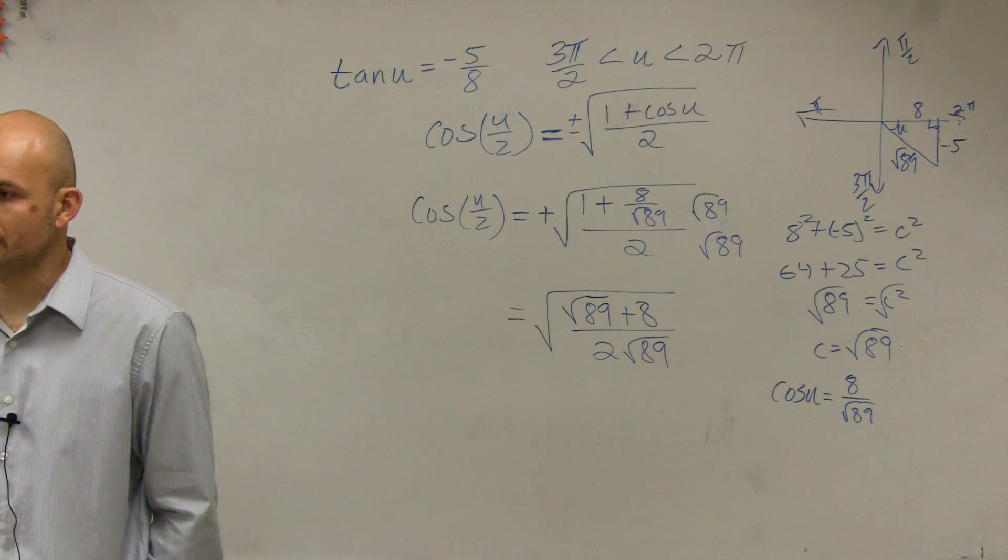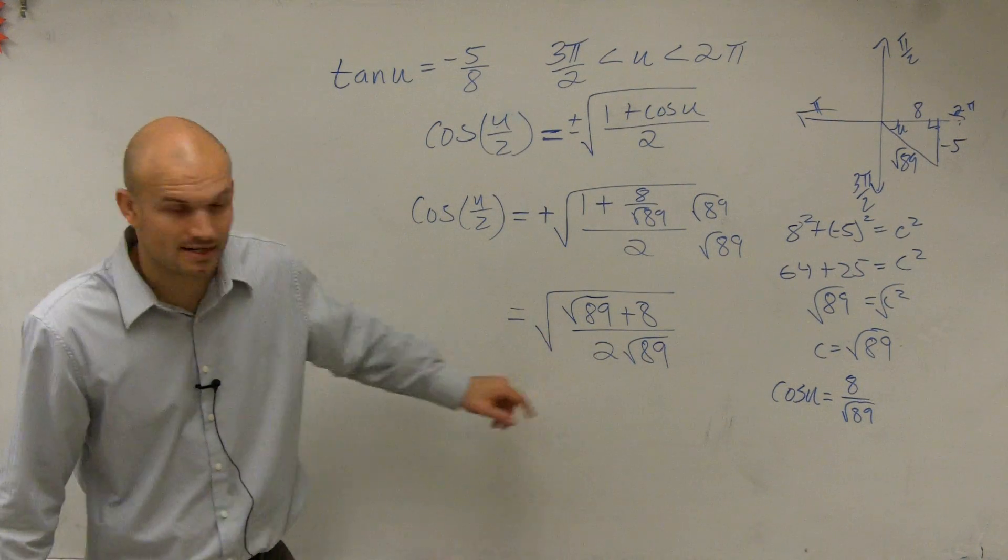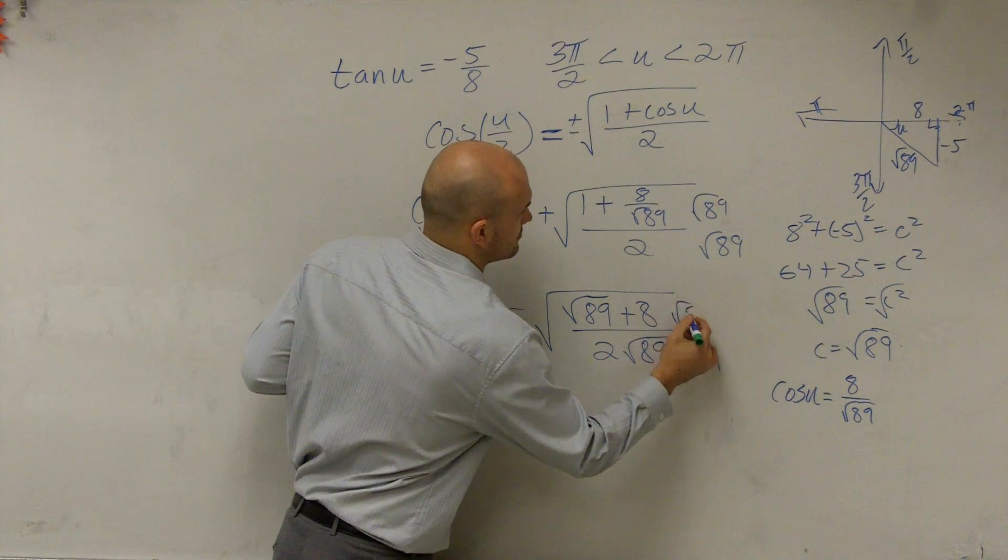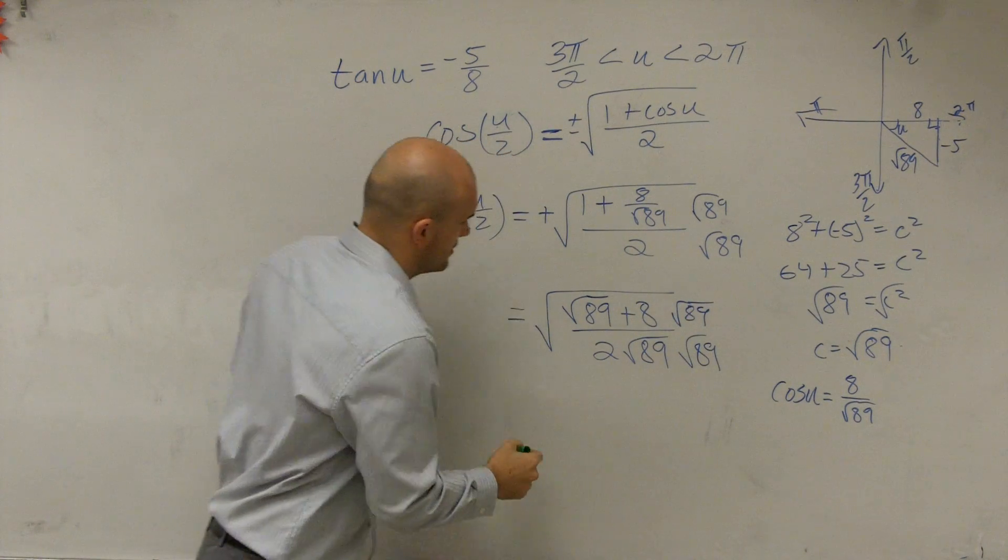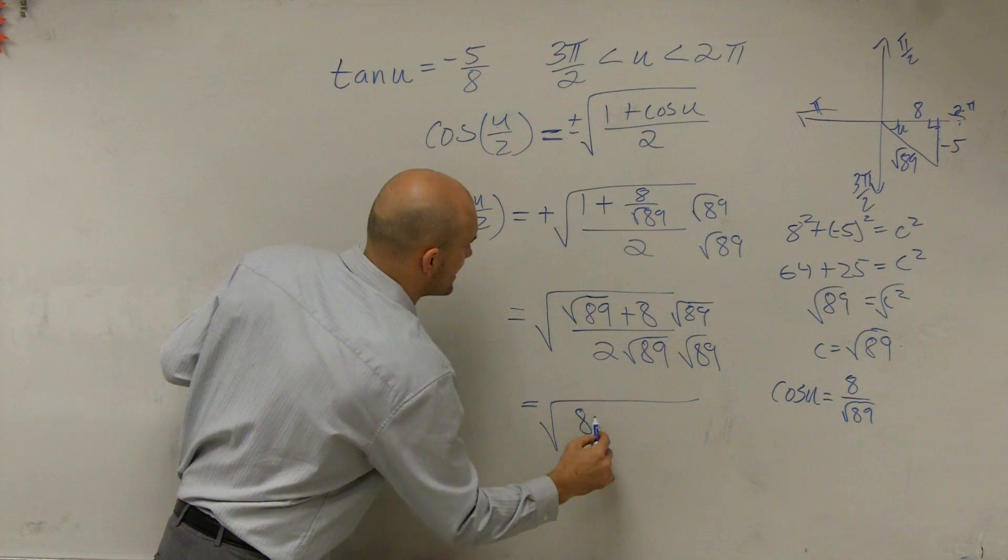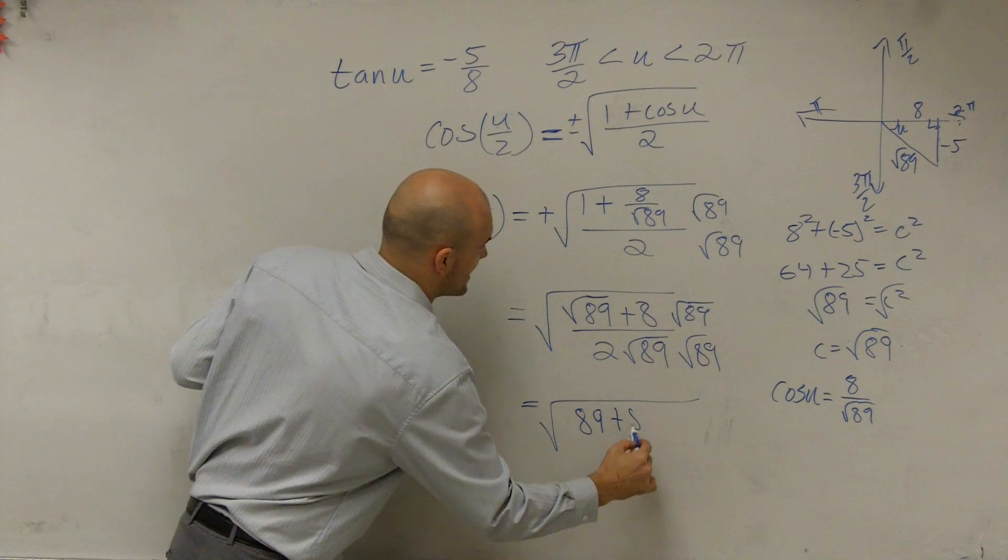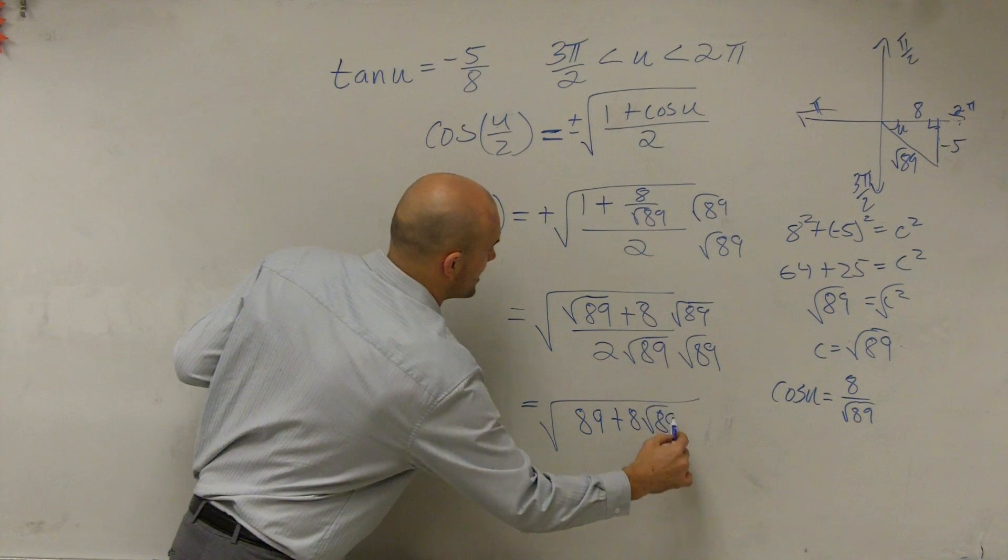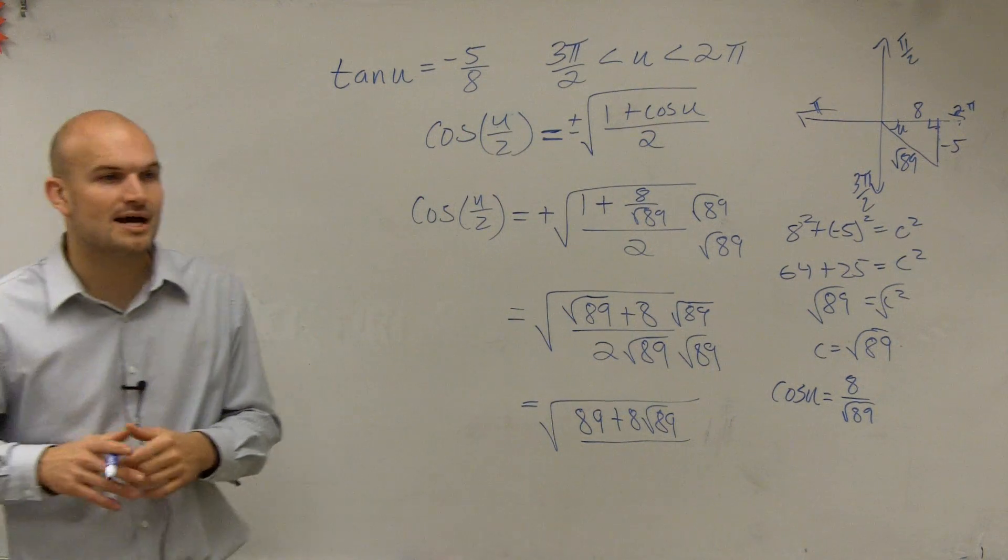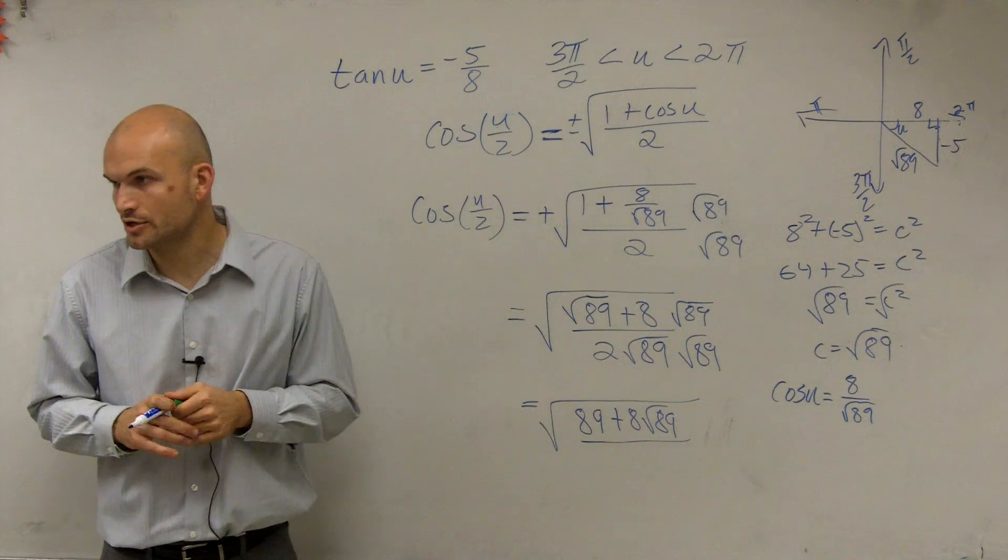Then, what I would do is make sure I could rationalize my denominator. Then, I'm left with 89 plus 8 square root of 89, divided by 2 times 89 is going to be 178.